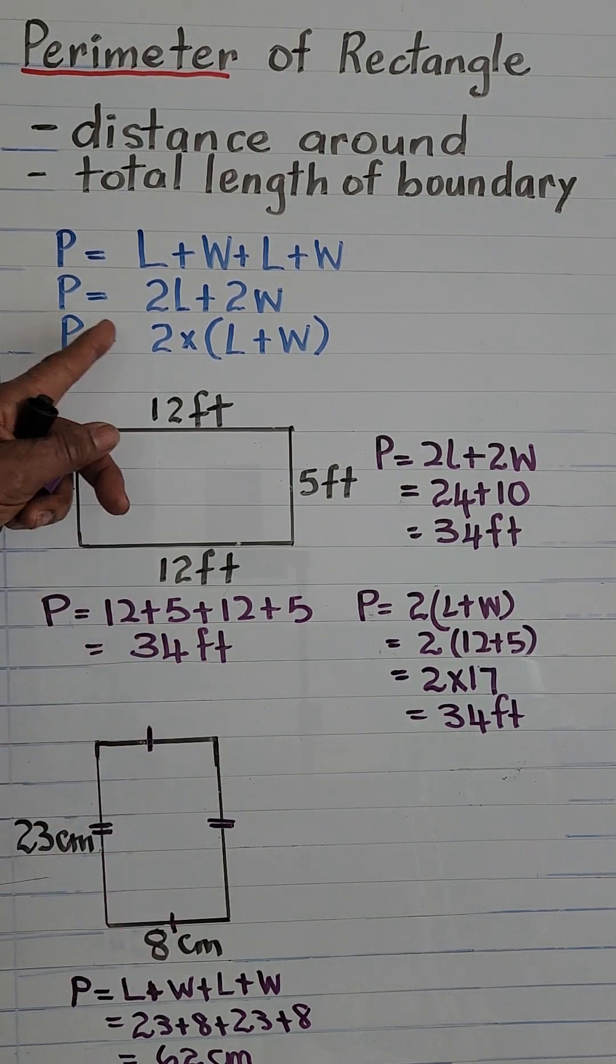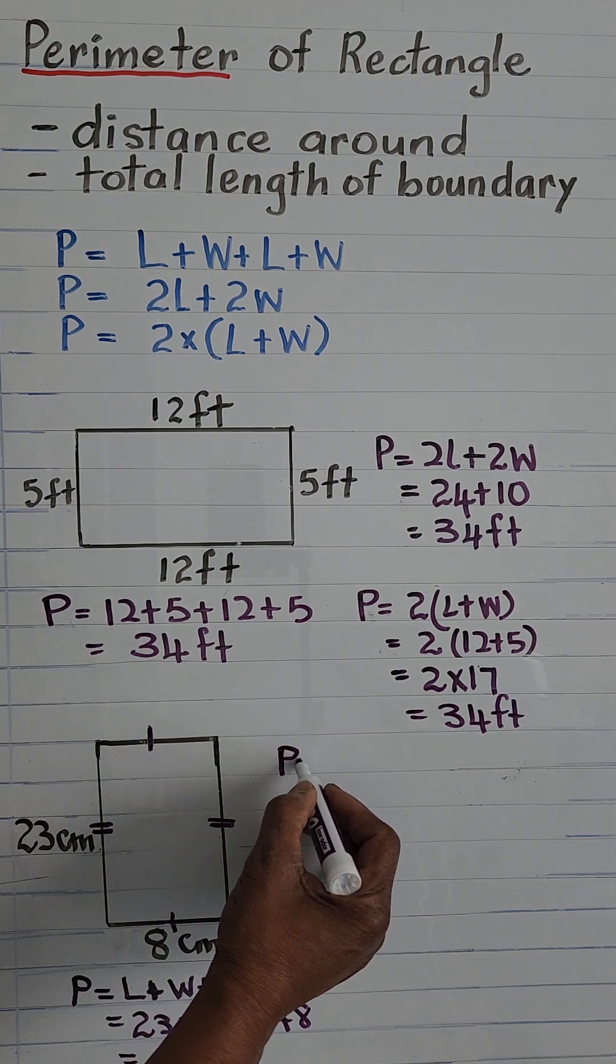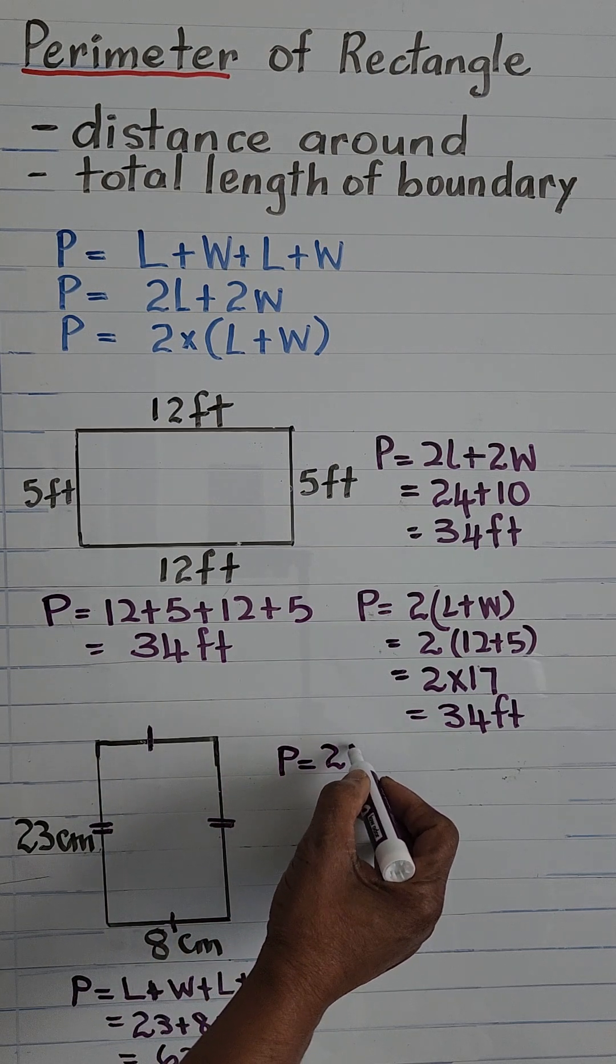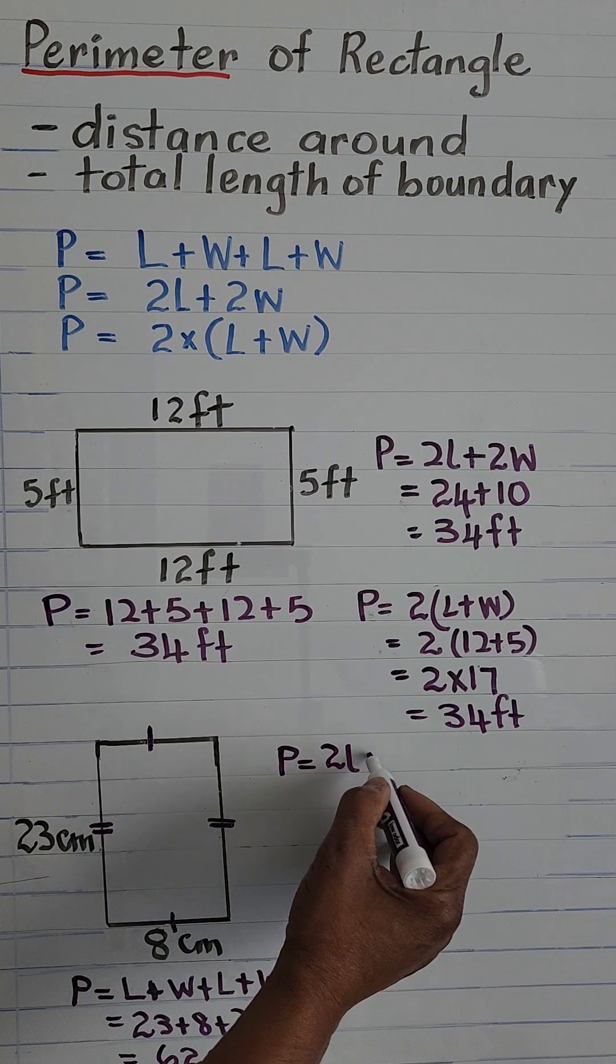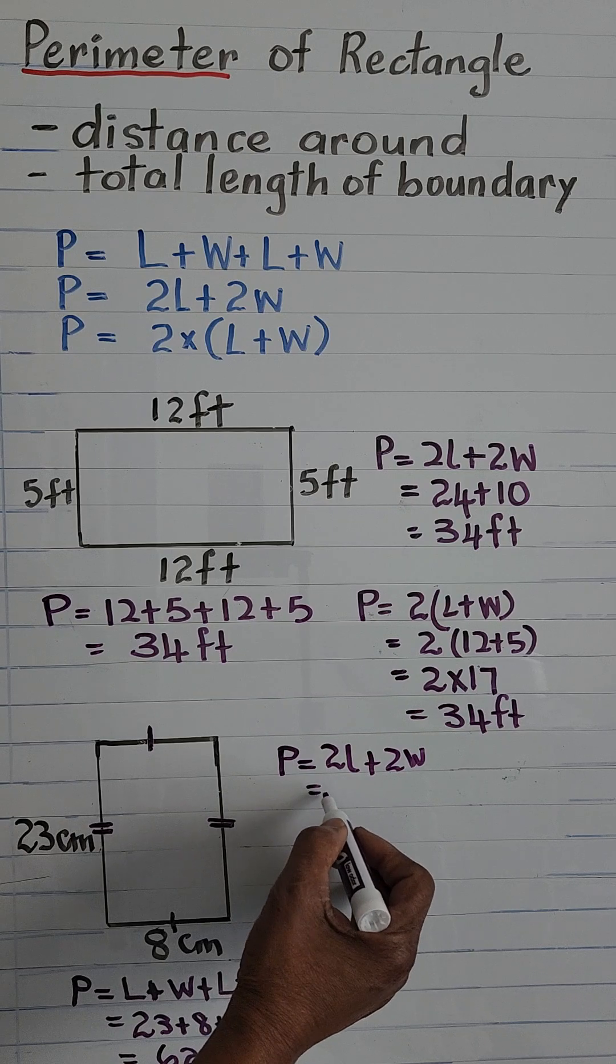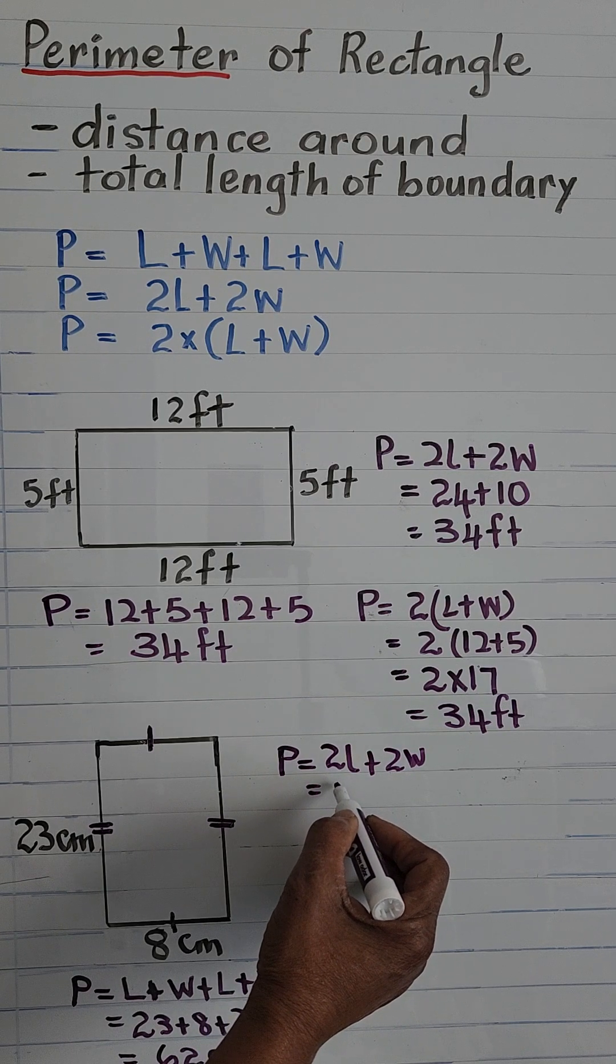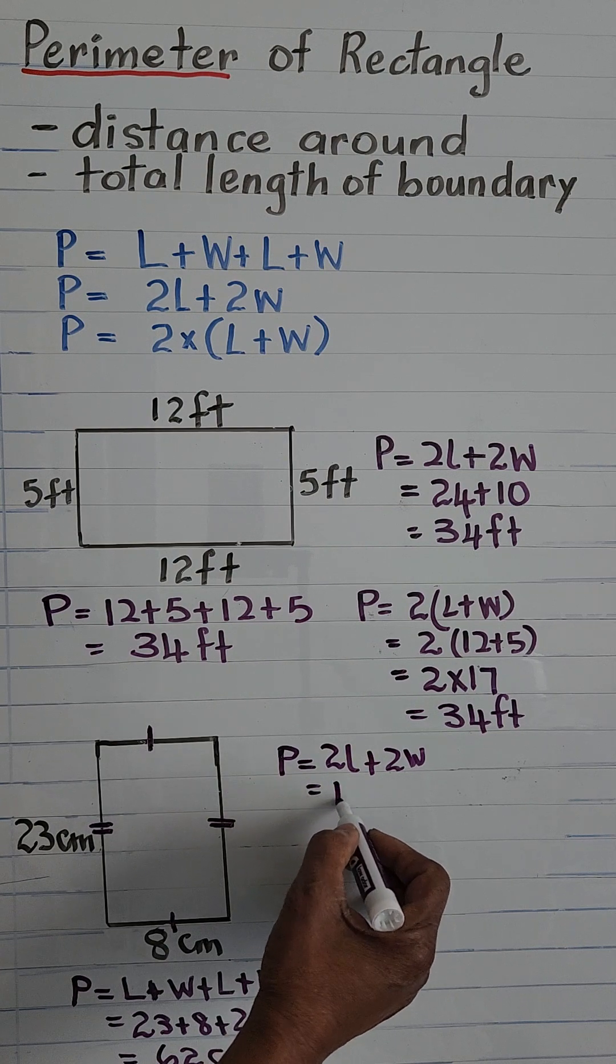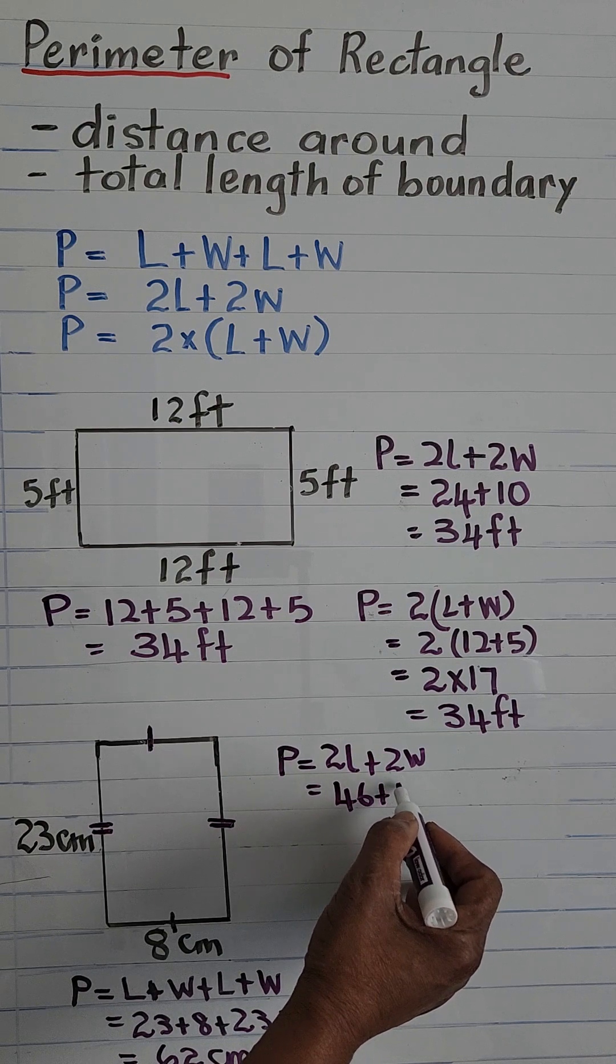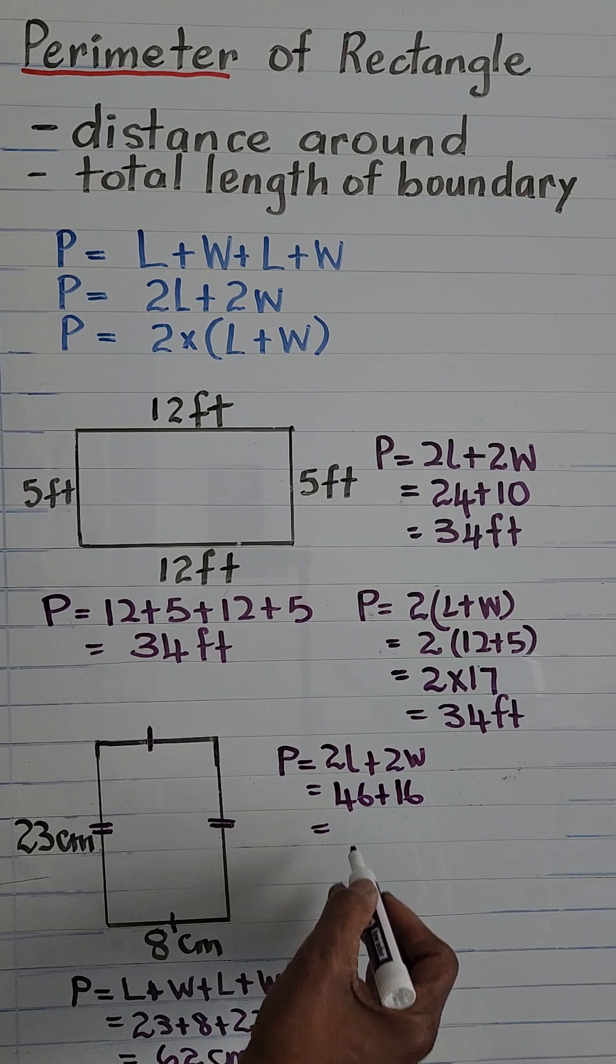Next, let's try P is equal to 2L plus 2W, and that is 2 times 23, which is 46, plus 2 times 8, 16, and that is equal to 62 centimeters.